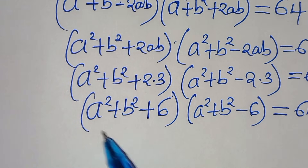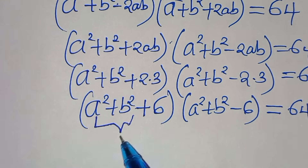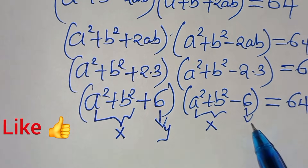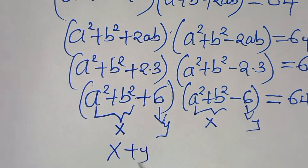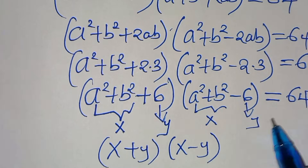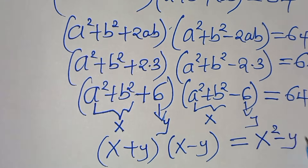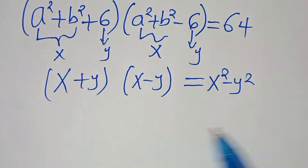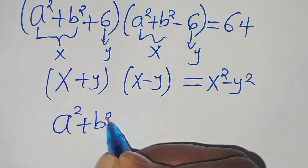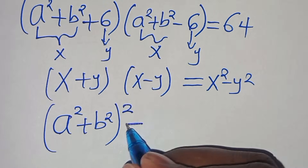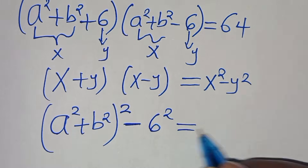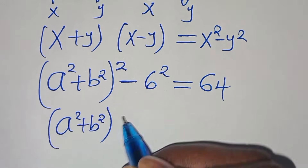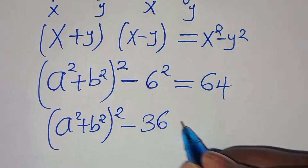We can let x equal a squared plus b squared and y equal 6. The expression is now in the form (x plus y)(x minus y), which equals x squared minus y squared. So we have (a squared plus b squared) squared minus 6 squared equals 64, which is (a squared plus b squared) squared minus 36 equals 64.